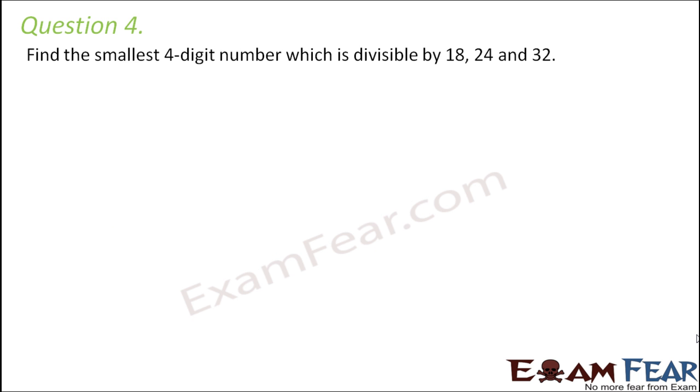Question number 4. Find the smallest 4-digit number which is divisible by 18, 24 and 32. When we say that this 4-digit number has to be divisible by 18, 24 and 32, that means that number is basically a common multiple of 18, 24 and 32. So we have to find the smallest 4-digit number which is a common multiple of 18, 24 and 32.